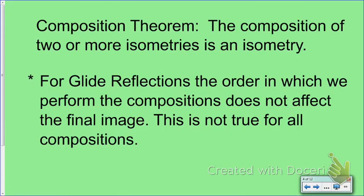The composition theorem states that a composition of two or more isometries is still an isometry — a transformation where a figure retains its side lengths and angles. For glide reflections specifically, the order in which we perform the compositions does not affect the final image. However, this is not true for all compositions; in the next few screens we'll see an example where changing the order results in a different final figure.